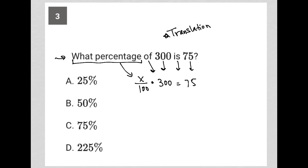So we could solve that by multiplying by this 300. I have 300x over 100 equals 75. I can then simplify this by crossing out zeros, leaving me with 3x equals 75, and then dividing both sides by 3, I'd have x is equal to 25. So that would be my answer.